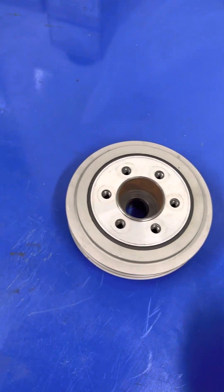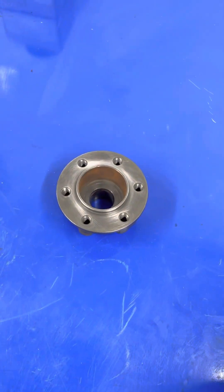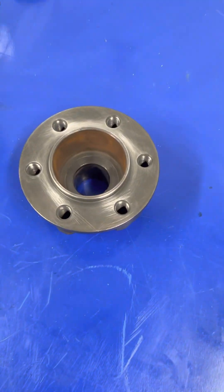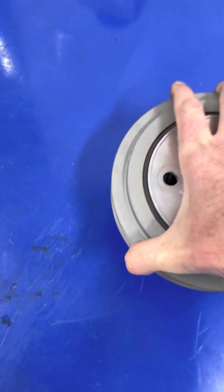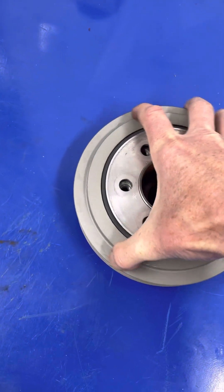This is one of the hubs that fits over the crank. There's a little keyway in there that holds it on. This is the accessory drive pulley.